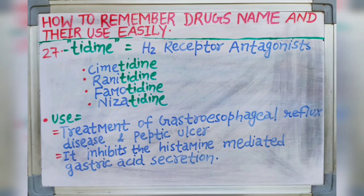Next suffix is -tidine. Tidine indicates H2 receptor antagonists. Drugs like cimetidine — which is the first H2 receptor antagonist and first-line drug — ranitidine, famotidine and nizatidine all end with the -tidine suffix. It is used in treatment of gastroesophageal reflux disease and peptic ulcer disease. It inhibits histamine-mediated gastric acid secretion.